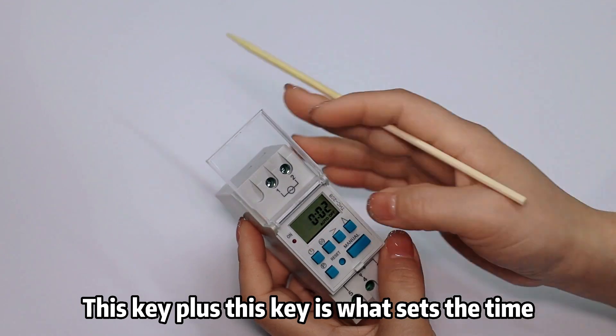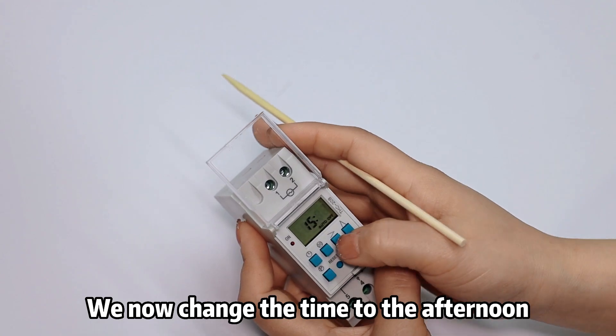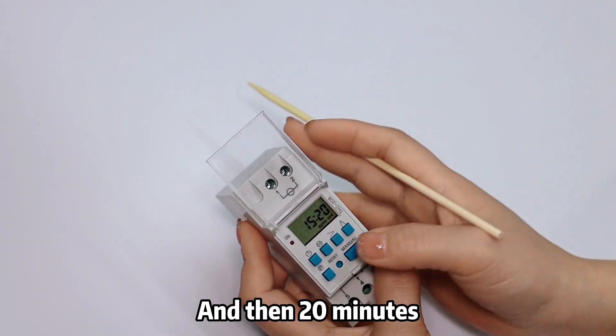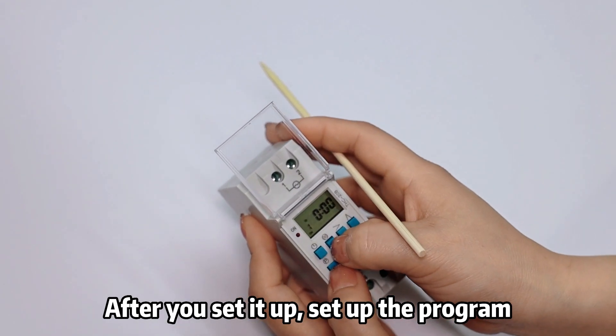This key plus this key is what sets the time. Wait for this to start flashing, then you can press this button to adjust the time. We now change the time to 3:00 PM and then 20 minutes. The time is set, exit. Now the year, month, day, and time are set.